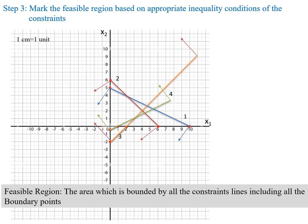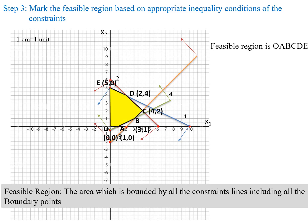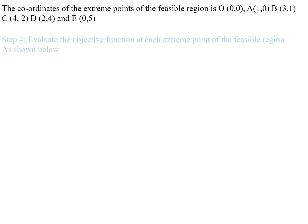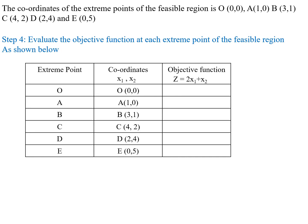Next we mark the feasible region for all the constraints. The feasible region is the area bounded by all the constraint lines — the common area for all constraint regions. Observe that O, A, B, C, D is the feasible region. We consider only the positive area. The coordinates for the feasible region vertices are: O (0, 0), A (1, 0), B (3, 1), C (4, 2), D (2, 4), and E (0, 5).